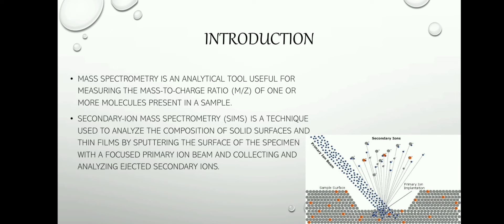Starting with the introduction, I have explained about the mass spectrometer and secondary ion mass spectrometry. Mass spectrometry is an analytical tool useful for measuring the mass-to-charge ratio of one or more molecules present in a sample.